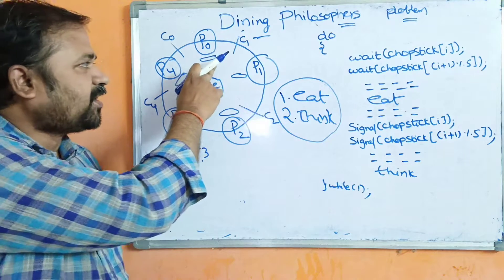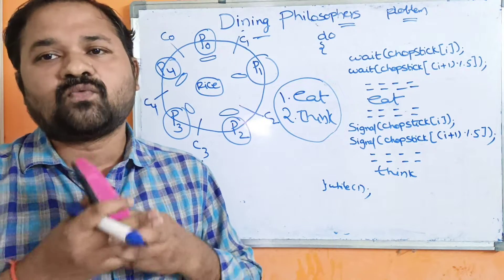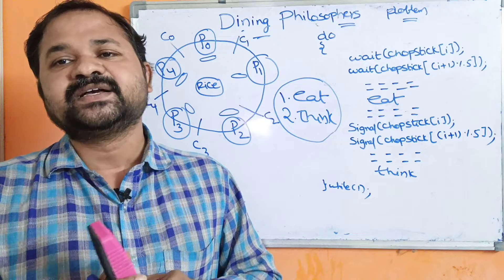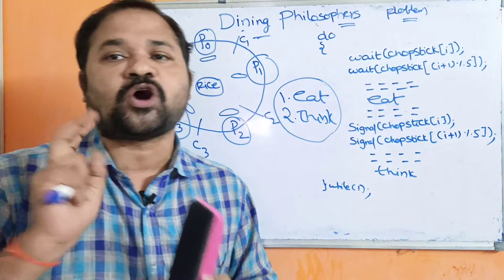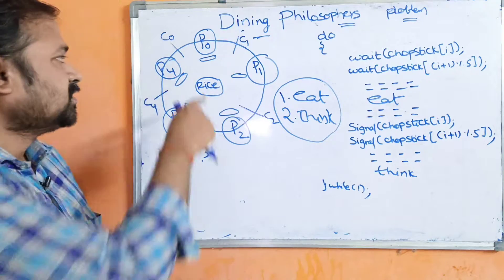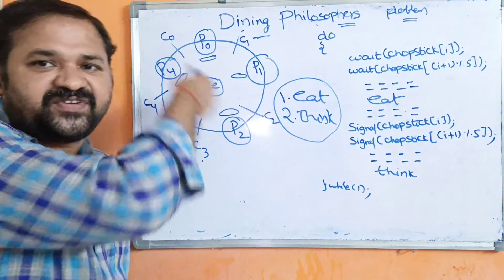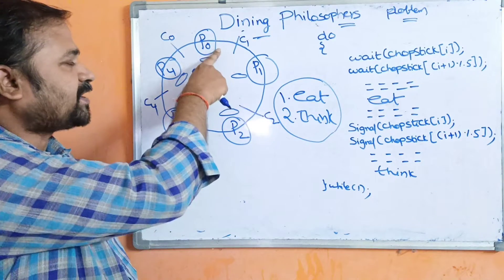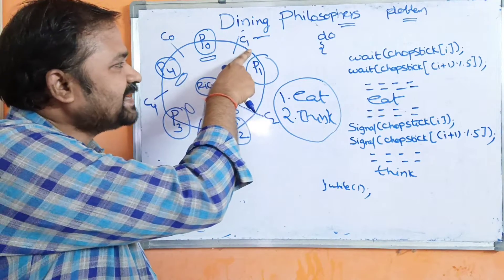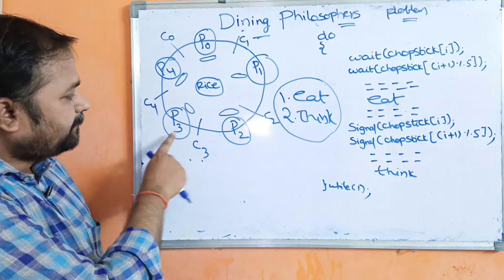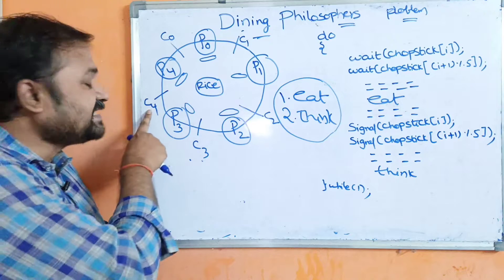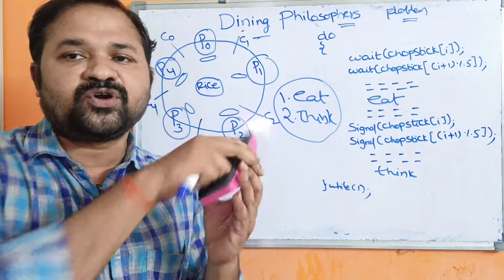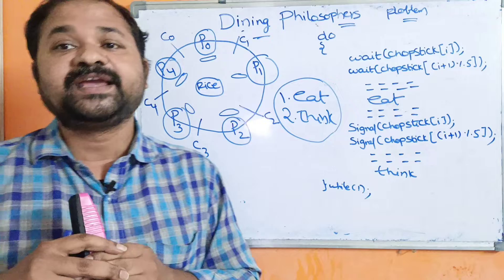Generally, one fork or one chopstick is enough for eating. But here the constraint is each philosopher must require two chopsticks in order to eat. On the left side of each philosopher we have a fork, and on the right side we have a fork. If we consider P0, P0 requires C0 and C1 forks for eating. If we consider P3, P3 requires C3 and C4 forks for eating.